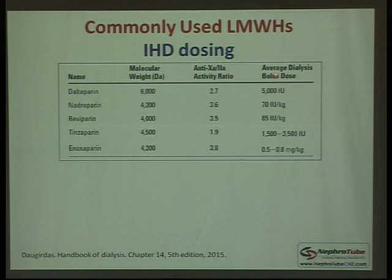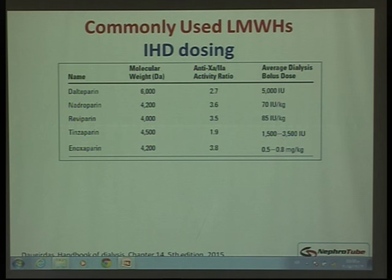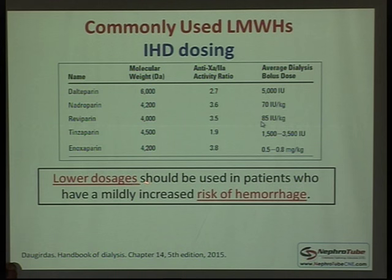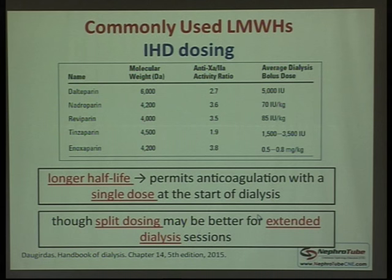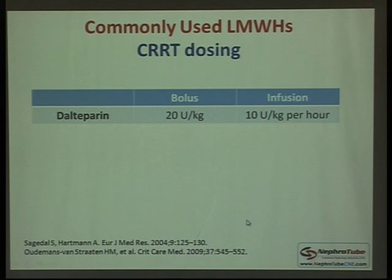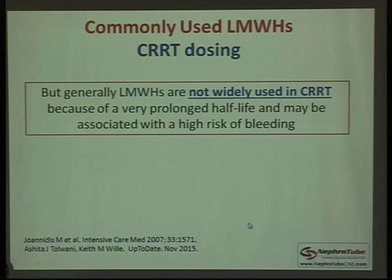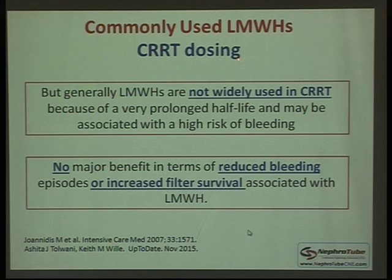For intermittent hemodialysis dosing of LMWH, each type has its specific bolus dose — reduce the dose if there is bleeding risk. As it is long-acting, a single dose at the start of dialysis suffices for a standard session; for extended sessions, splitting the dose may be needed. For CRRT, there are some recommended doses, but LMWH is not widely used in CRRT due to limited experience, and available data show no reduction in bleeding or increase in filter survival compared to unfractionated heparin.